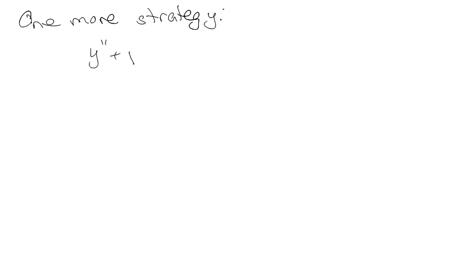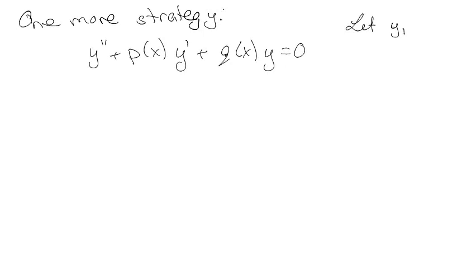One more strategy: again we've got our standard second-order linear ordinary homogeneous differential equation. Let's say we know that Y1 is a solution, but we don't know Y2. One thing we can do — and we've done this a lot — is guess that Y2 is of the form U(x) times Y1, where U is some unknown function.